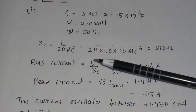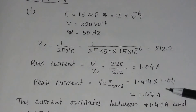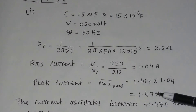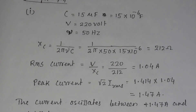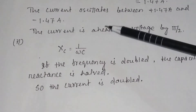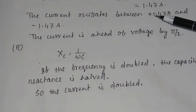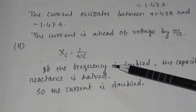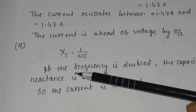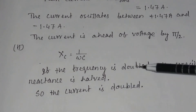The RMS current = voltage / Xc = 1.04 A. The peak current = √2 × I_RMS = 1.47 A. The current will oscillate between 1.47 A and −1.47 A. The current is ahead of the voltage by π/2. Since Xc = 1/(ωC), if the frequency is doubled, the capacitive reactance will be halved, and consequently the current will be doubled.